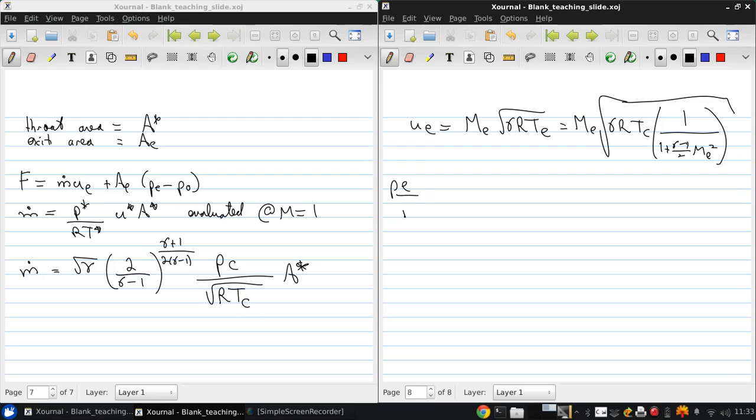But also remember we have P over PC is 1 over 1 plus gamma minus 1 over 2 ME squared to the gamma over gamma minus 1.